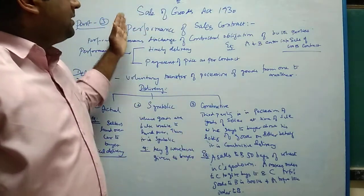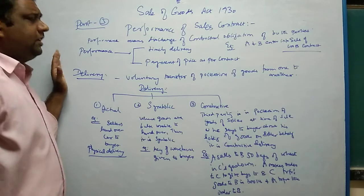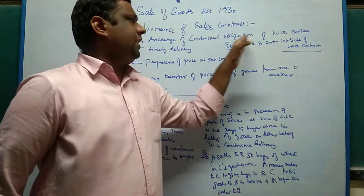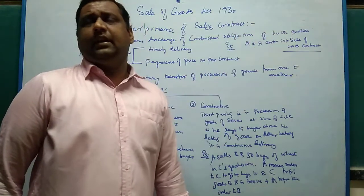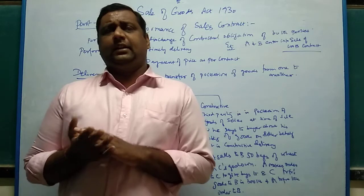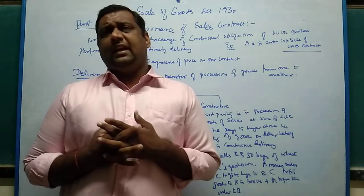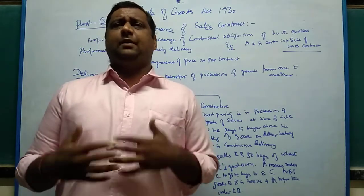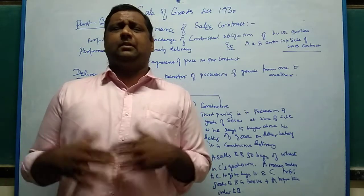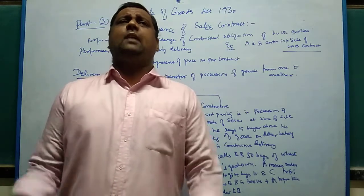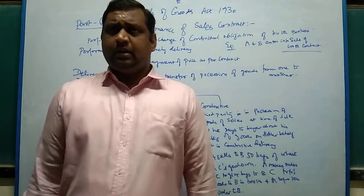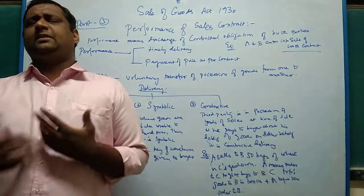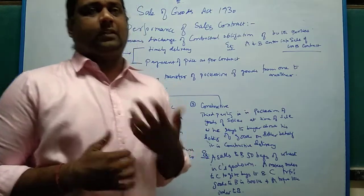When it comes to performance of the sales contract, this is a primary provision in the sale of goods. Performance means discharge of contractual obligation of both the parties. A being the seller and B being the buyer, they both enter into the sales contract where A is supposed to sell the goods and B is supposed to pay the price. When they perform their respective obligations — delivery is done and payment of the price is done — the contract is said to be complete and thereafter the contract is concluded. The steps taken for completing the contract are included in performance.